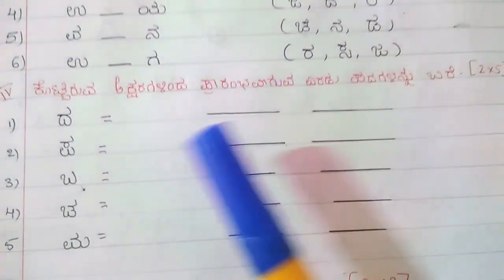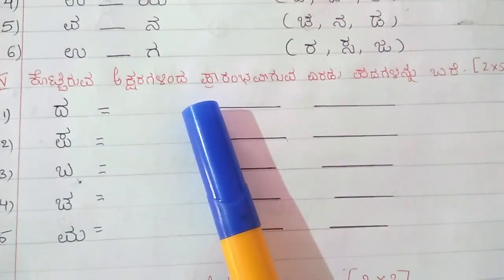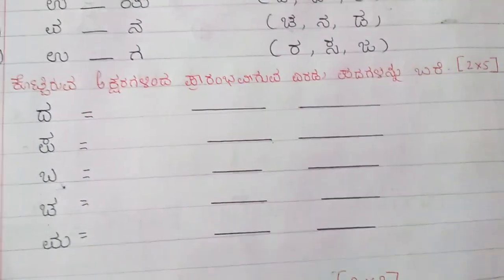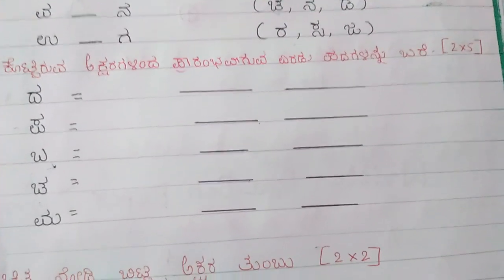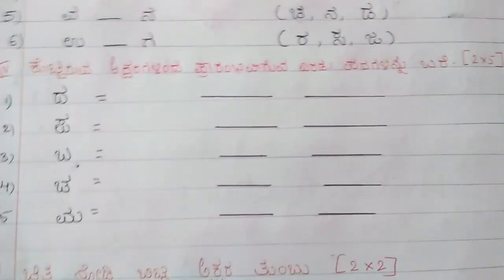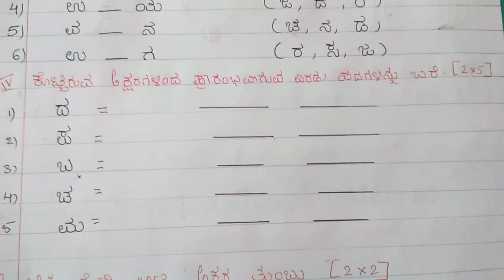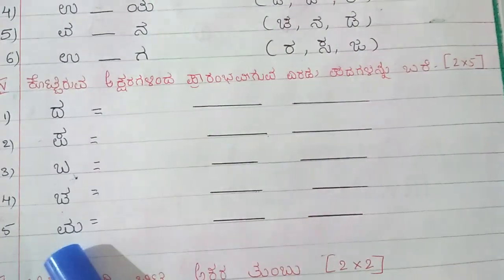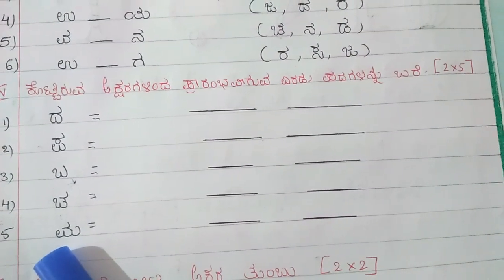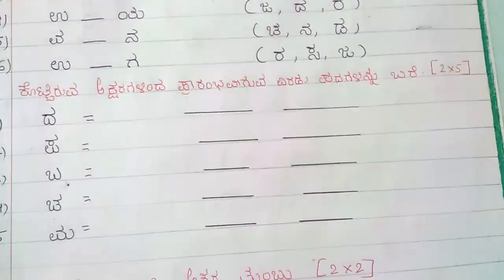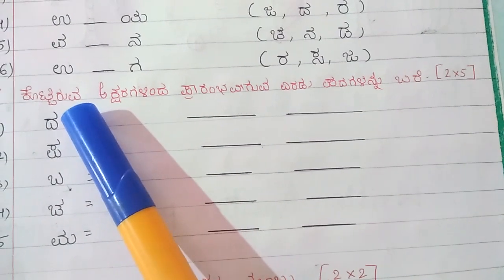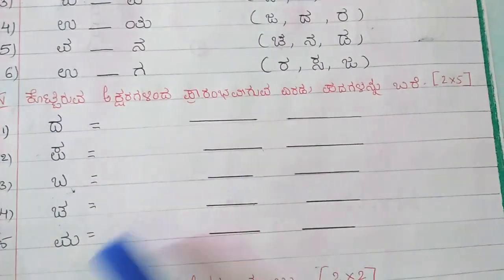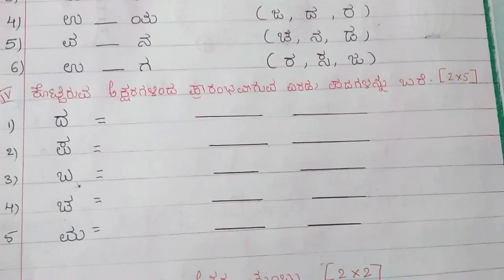The next question is for 10 marks. Here the child has to identify the letters and list 2 words that begin with each of the letters given. This is for 10 marks. Thank you.